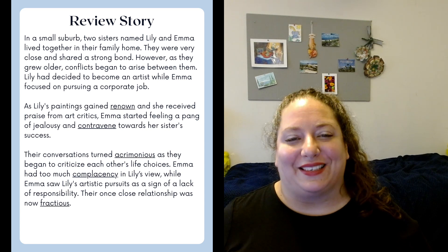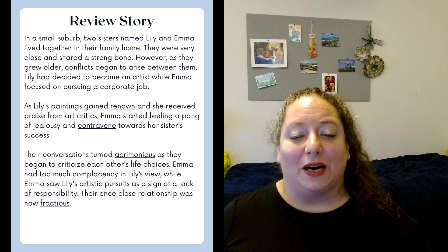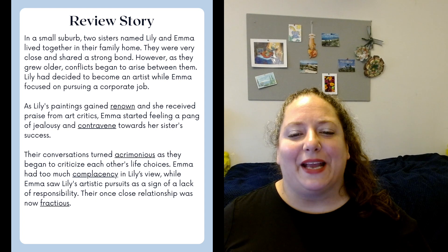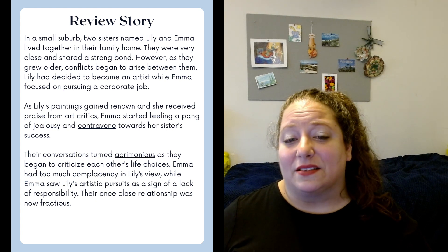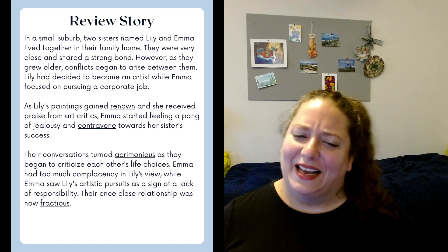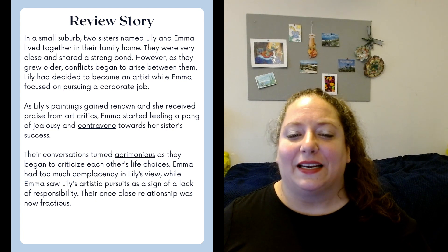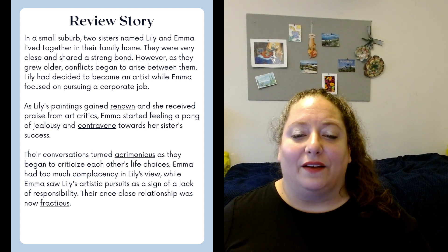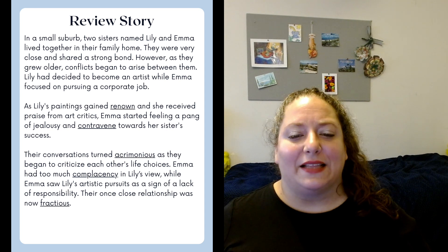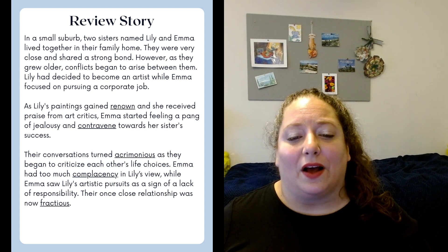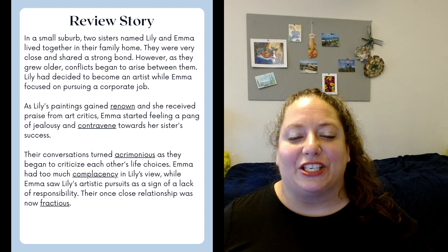So let's do a review story for extra practice. Listen to me read the story. In a small suburb, two sisters named Lily and Emma lived together in their family home. They were very close and shared a strong bond. However, as they grew older, conflicts began to arise between them. Lily had decided to become an artist, while Emma focused on pursuing a corporate job. As Lily's paintings gained renown, she received praise from art critics. Emma started feeling a pang of jealousy and contravention towards her sister's success. Their conversations turned acrimonious as they began to criticize each other's life choices. Emma had too much complacency. In Lily's view, Emma saw Lily's artistic pursuits as a sign of a lack of responsibility. Their once close relationship was now fractious.